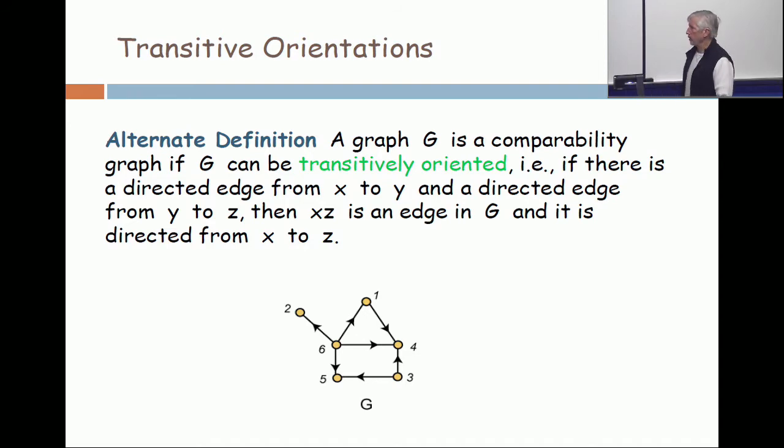Look at the graph shown, and look at the triangle at the top. If you look carefully, you see the edge 6 to 1, and you see the edge 1 to 4. Now, because you have those two edges, you must have an edge 6 to 4, and it must be oriented from 6 to 4.